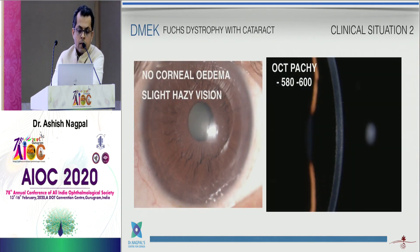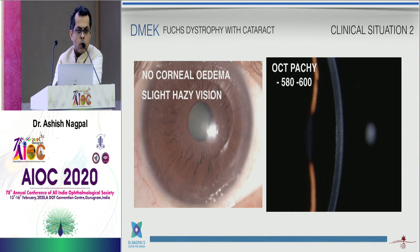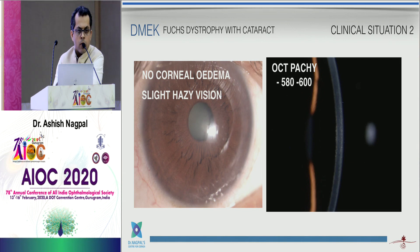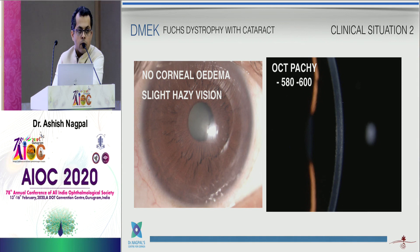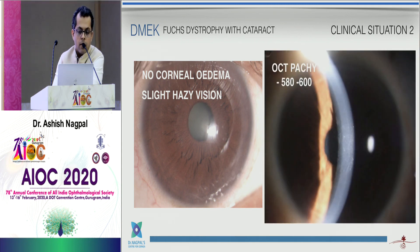In the other patient situation, there is no corneal edema but slightly hazy vision. We don't know if it's from the cataract or the cornea. Look at the pachymetry — look at the compactness of the cornea. If the pachymetry is above 580–600, as in this case, then we would think of doing a combined procedure — both phaco and DMEK together.